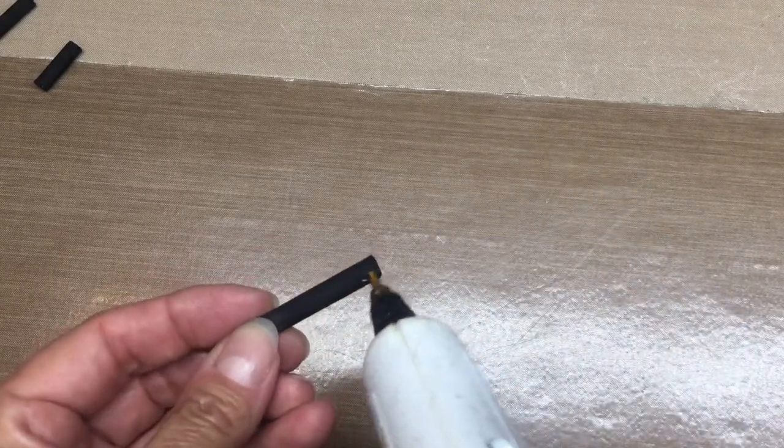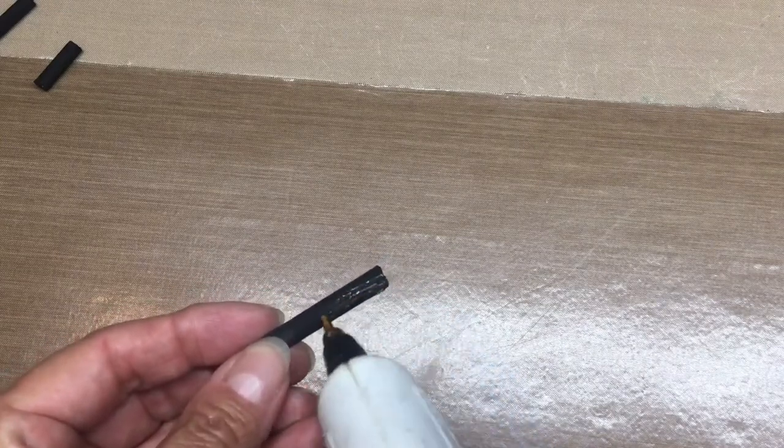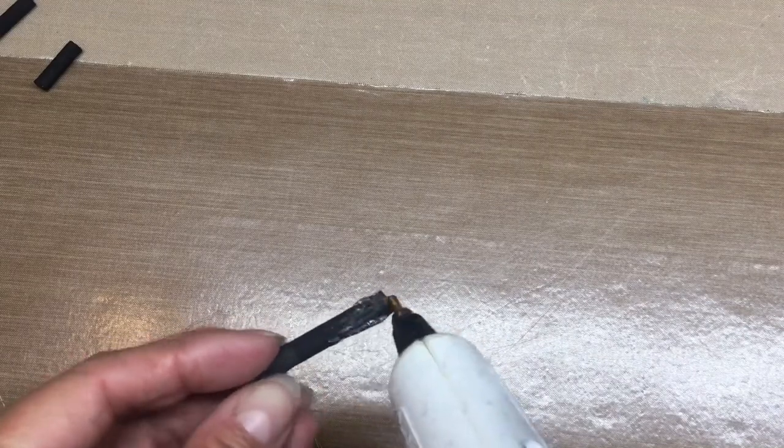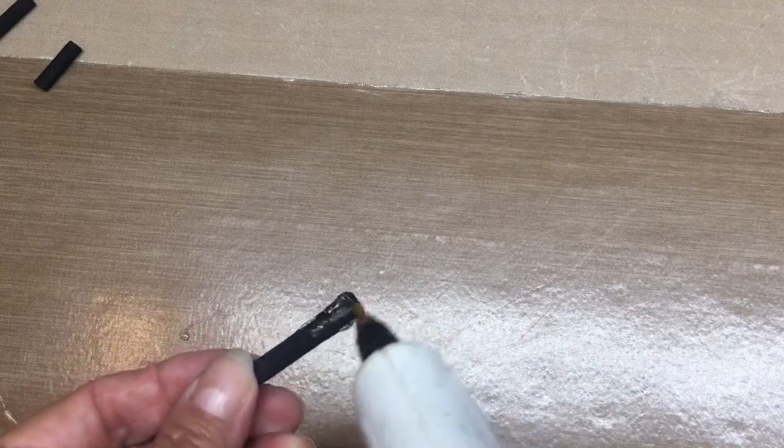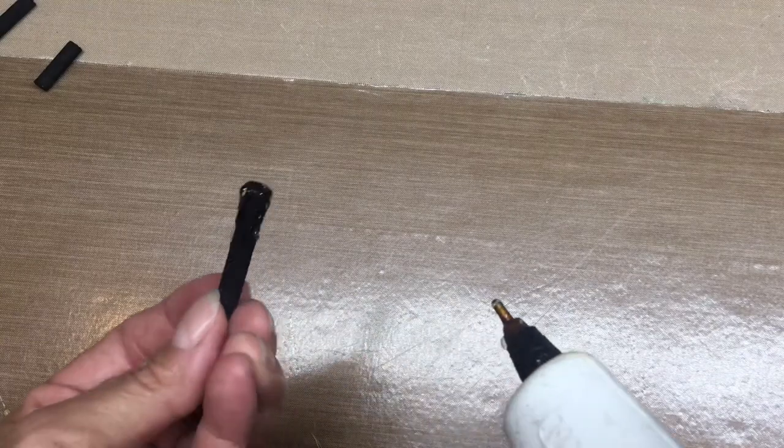Then you want to heat up your trusty glue gun and you just want to start dragging the glue tip along to give a melted wax effect. I really love how this turned out.